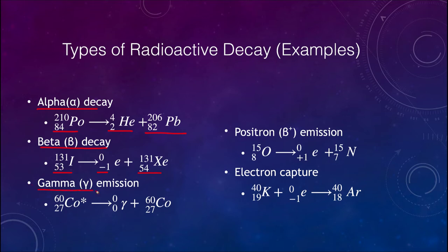For gamma emission, we give off a gamma ray, so nothing really changes — cobalt-60 becomes cobalt-60. The asterisk indicates that the original cobalt-60 was in an excited state and gave off a gamma particle. This is very similar to the transition we get when an electron is in an excited energy level.